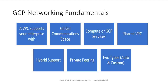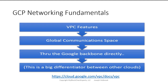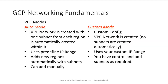When it comes to VPC features, the global communication space of a VPC goes through the Google backbone directly. You're not going via an external IP address to get to another region — you're going directly over Google's well-provisioned, low latency network. This is different from a lot of other cloud providers. There are two modes: auto mode and custom mode. Auto mode is automatically created for you. When you first log in and get started with VPC, there'll be 20 subnets created — one per region at the time of writing.